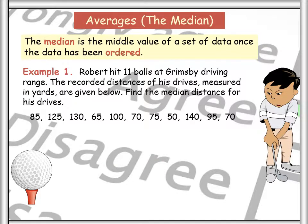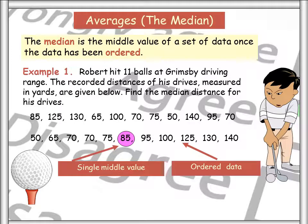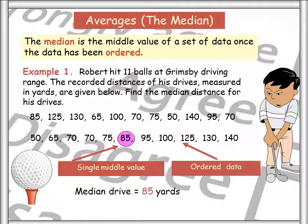If we look at the median, as we said before, the median is the middle value, but you must remember to order the data first and then calculate the number that's in the middle. So on the screen, the middle number is 85, therefore the median is 85.